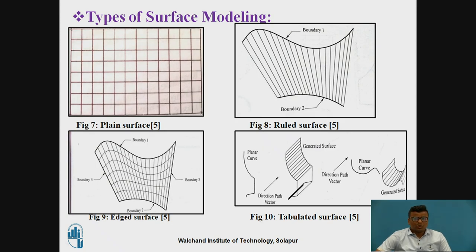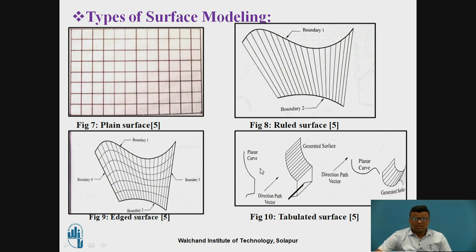There are different types of surface modeling. The first is plane surface, which is very simple and moves in only one direction. The second is the ruled surface, which moves in two directions — boundary one and boundary two — creating the model as per the curve. The third is the edge surface, where four boundaries will be there with curvature and linear parts combined. The fourth type is tabulated surface, where you want a combination of curvature and linear surface to get planar and curved surfaces.